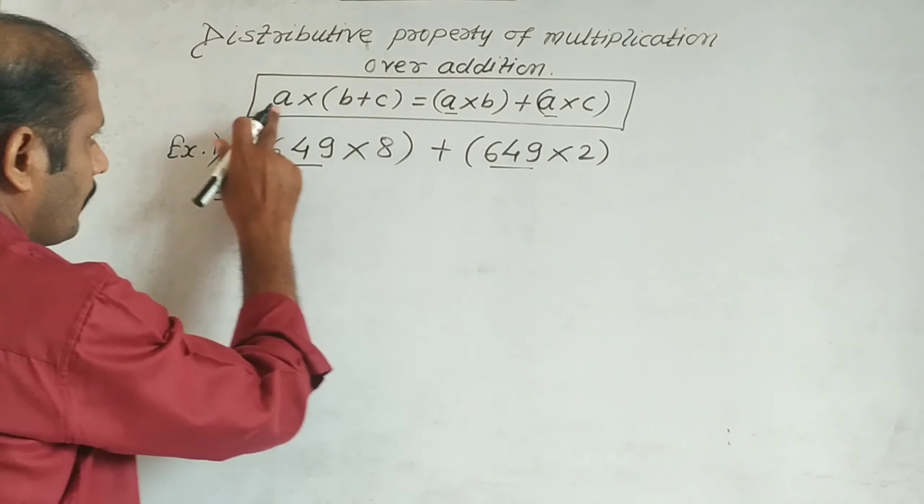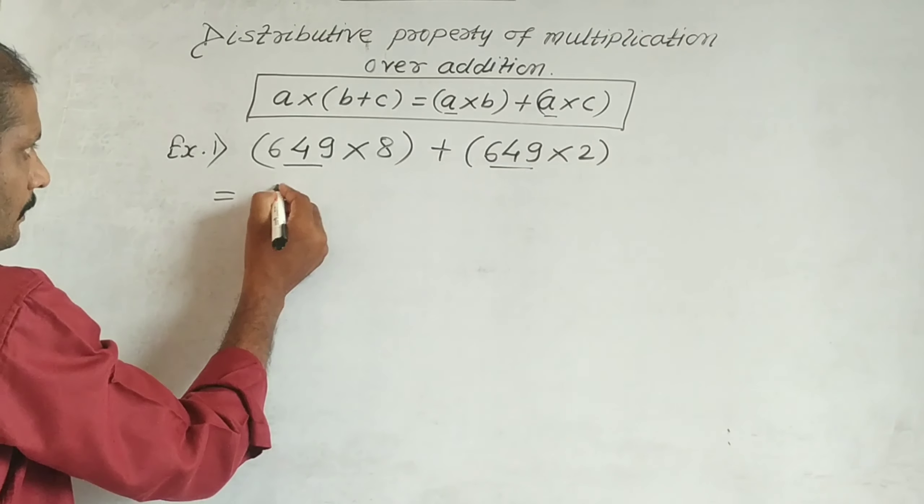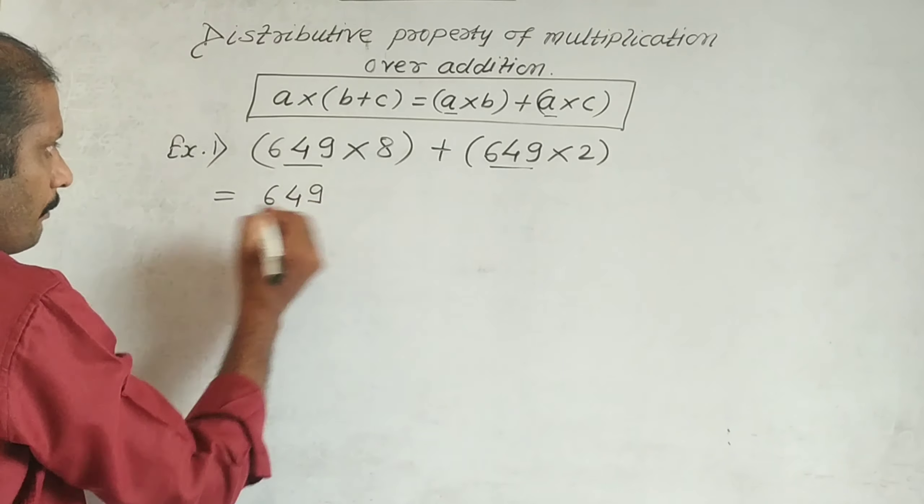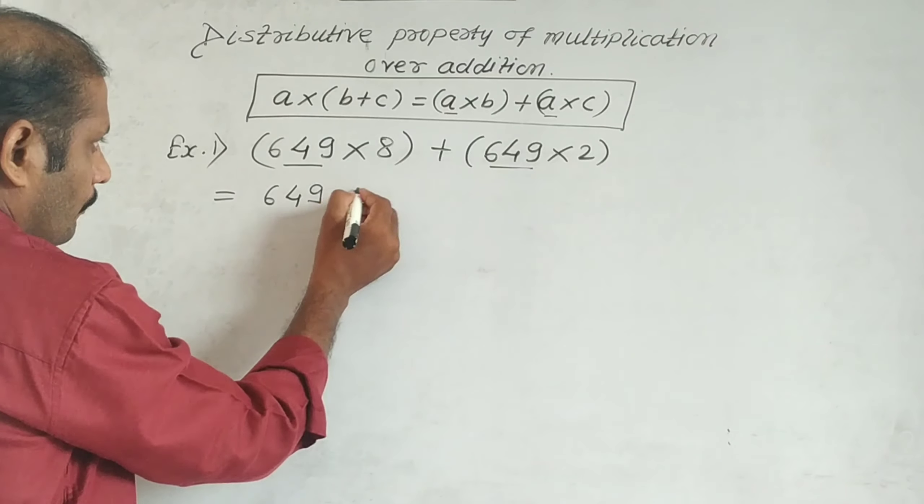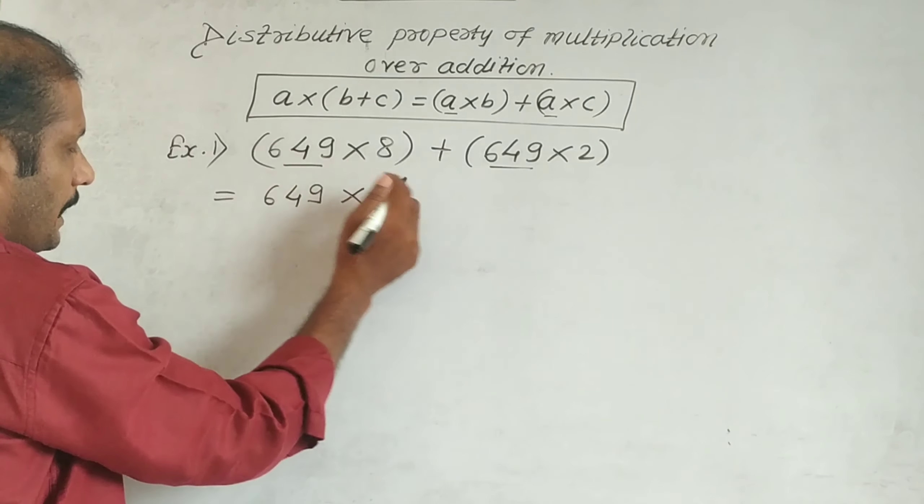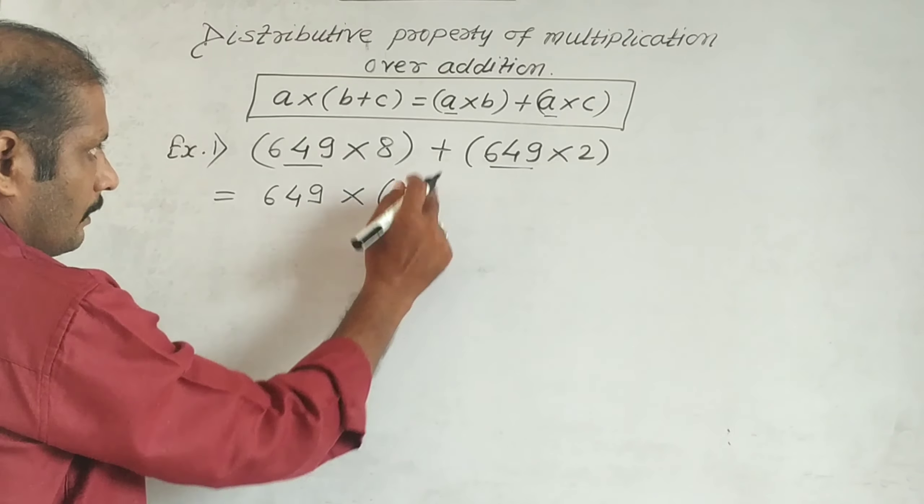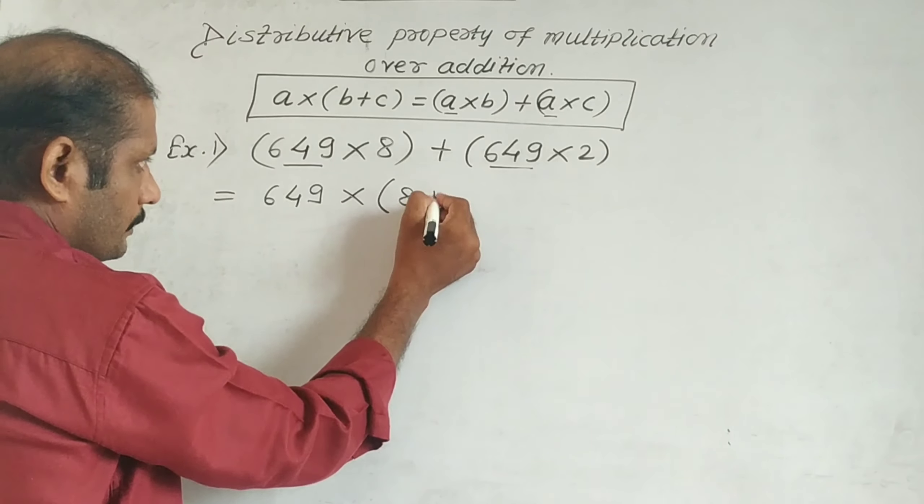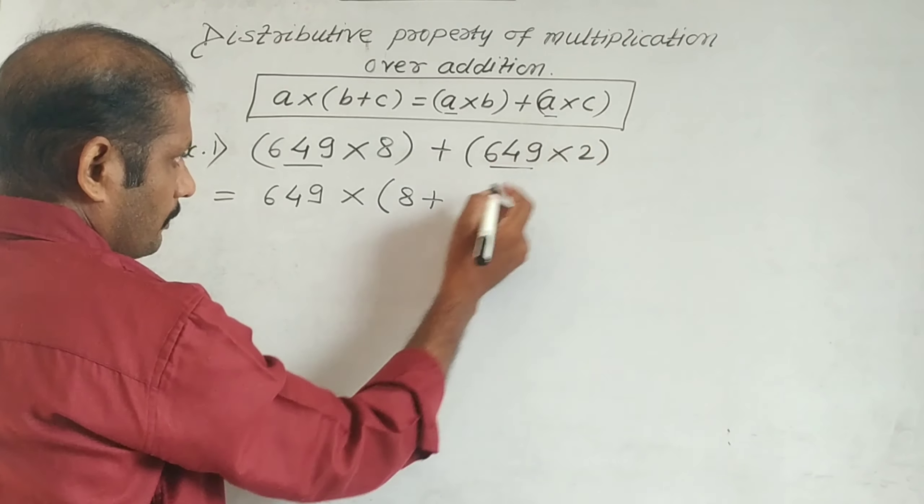649 multiplied by... What remains in the first bracket? 8 remains. The plus sign we keep as plus. And in the second bracket, 2 remains. So we write 2.